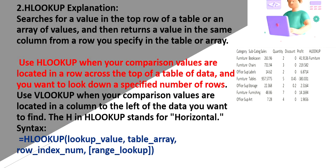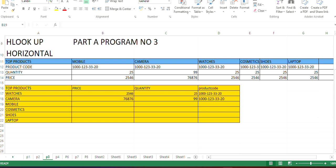Next is HLOOKUP. H indicates horizontal lookup, so it searches the value across the top row of a table or array and returns the value of the column or row you have specified. When to use HLOOKUP vs VLOOKUP: when values are located in a row across the top of a table, use HLOOKUP; when data is located in a column, use VLOOKUP. The syntax is similar — lookup value, table, then row index instead of column index, and range of the lookup.